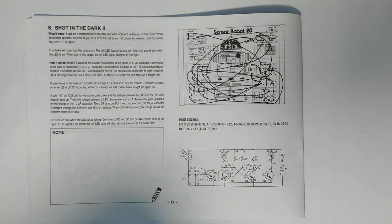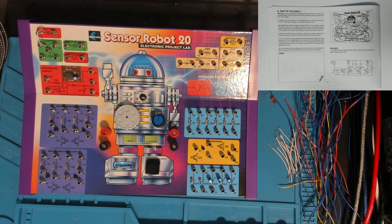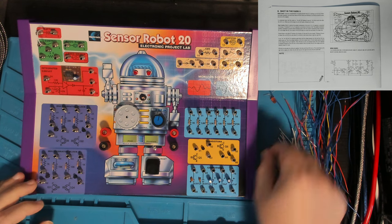It's not very clear, is it? The current flows to the right LED to signal a hit. When the left LED turns off, the right one turns off at the same time. Okay. Well, let's wire this thing together and then we'll see how it actually works. So we've got 1 to 3 which is already in there. And then 2 to 53.